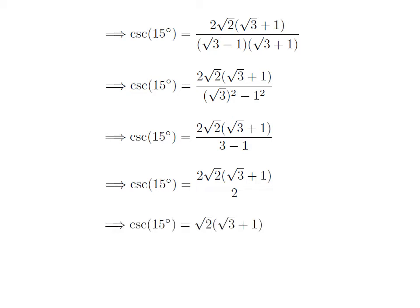Now you can see 2 as a common factor in the numerator and the denominator in the above expression. So cancelling the common factor, we get cosecant of 15 degrees is equal to square root of 2 into whole of square root of 3 plus 1.